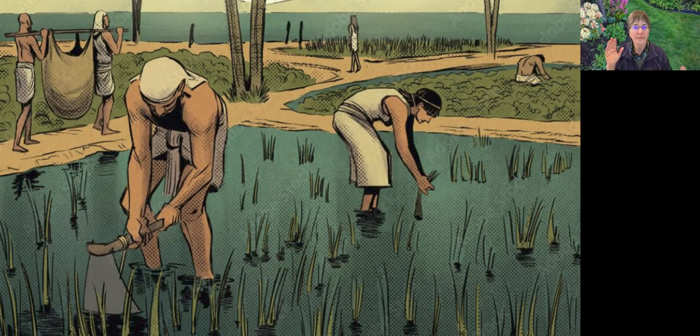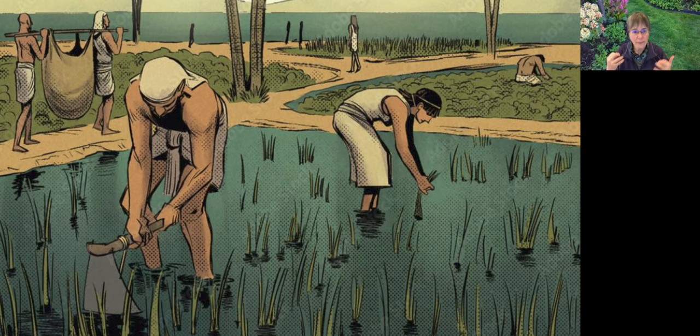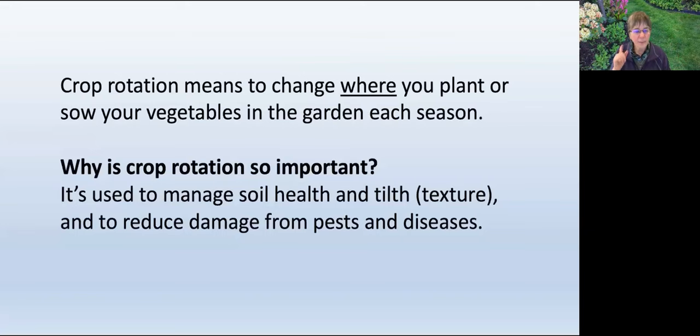It's one of agriculture's oldest cultural practices, with roots — pardon the pun — that stretch back to ancient times. Crop rotation simply means that you change where you plant or sow your vegetables each season. It's primarily about vegetables in the garden.